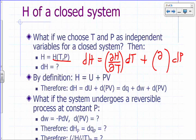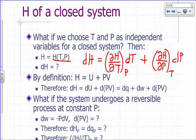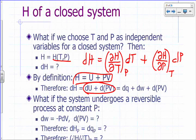dH is the partial of H with respect to T at constant P times dT, plus the partial of H with respect to P at constant T times dP. By definition, H is U plus PV — that's the definition of enthalpy — so we can write dH equals dU plus d(PV).